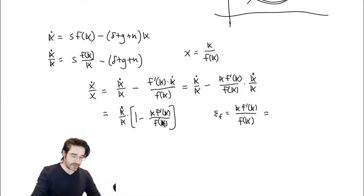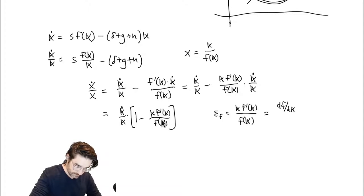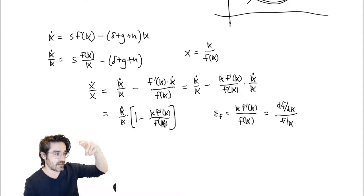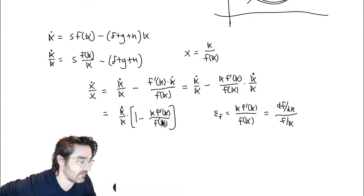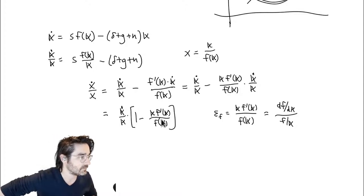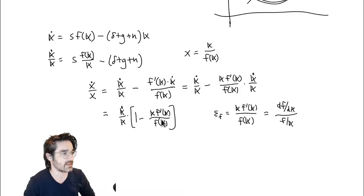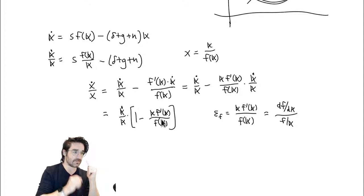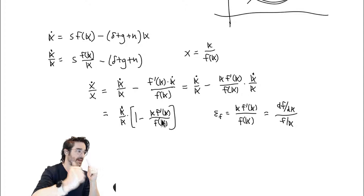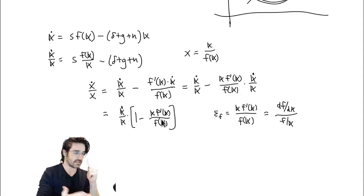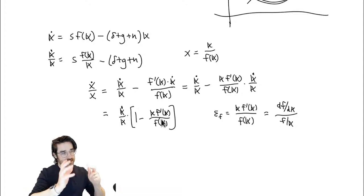You can also write the elasticity as dF/dK divided by F(K)/K — you're taking the derivative and dividing by the ratio of the function value to the input value. What this does is turn it from a derivative in level terms into something like a proportional derivative. The elasticity tells you: if I change the input value by 1%, how many percent do I change the output value by? A unit elasticity means they move proportionally the same; an elasticity of two means 1% input gives 2% output.